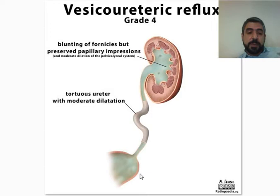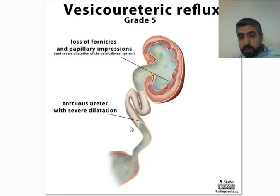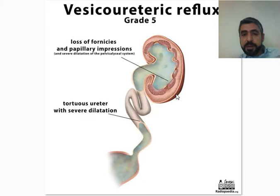In Grade 5, the ureter is tortuous and markedly dilated, and the fornices are completely lost. The papillary impressions are lost — it's just a bag of urine — and you may sometimes see cortical thinning.